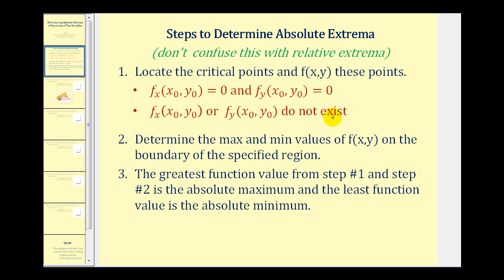Next we're going to determine the max and min function values on the boundary of the specified region. Then the greatest value from steps one and two will be the absolute maximum, and the least function value will be the absolute minimum.